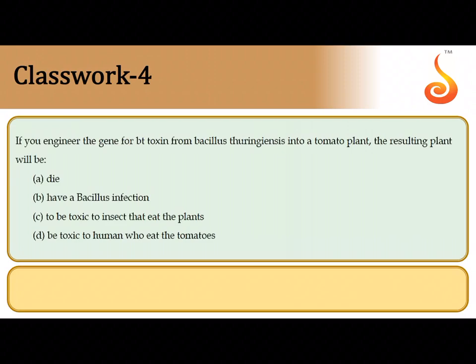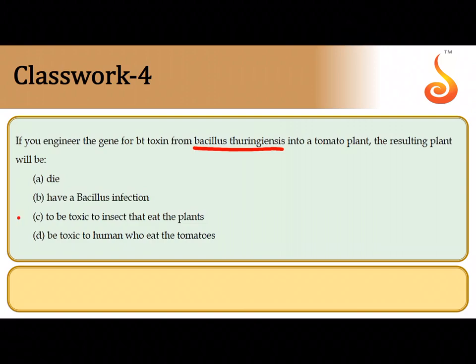The fourth question says: if you engineer the gene for BT toxin from Bacillus thuringiensis into a tomato plant, what is the result? Obviously, Bacillus thuringiensis is the source of BT toxin used as an insecticide. So the resulting plant will be toxic to the insects that feed on it.